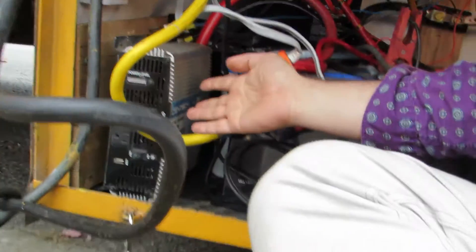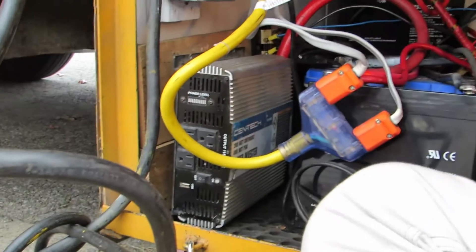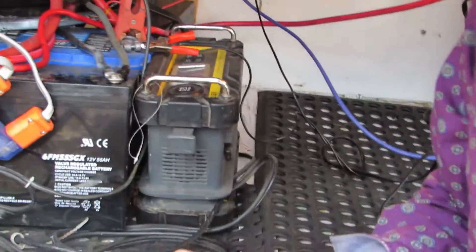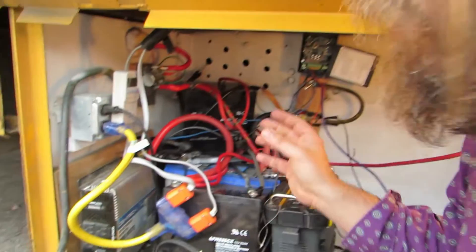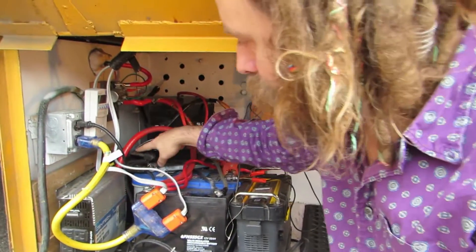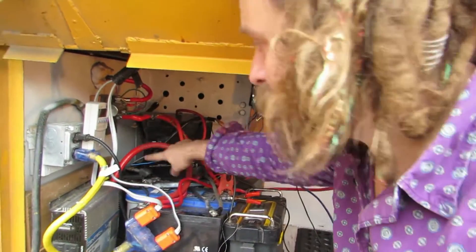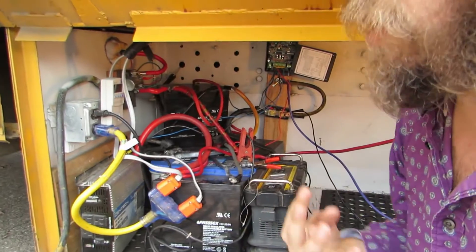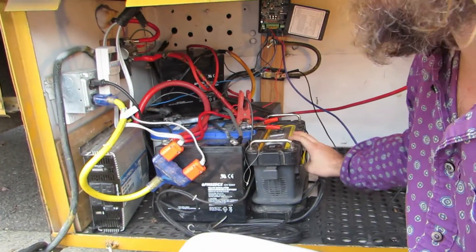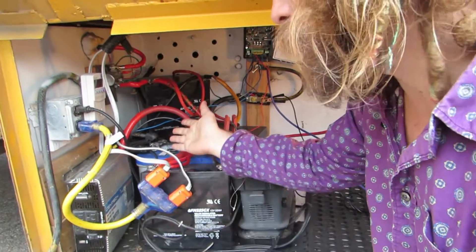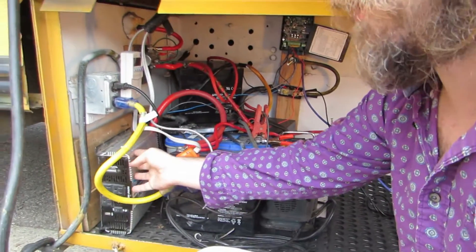Now, the inverter we only ever use on the road, and the charger we only ever use when we're plugged in. There would never be a reason to use them both at the same time. So, when we are measuring positive current, meaning electrons are coming into the battery system through this shunt, we know that we're on shore power and we have the charger going. When we're measuring negative current through that shunt, we know that it's through the inverter.